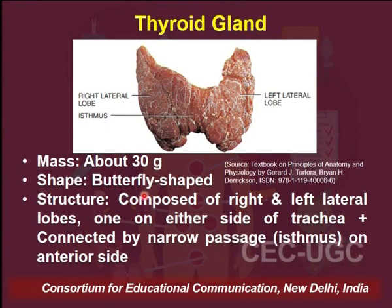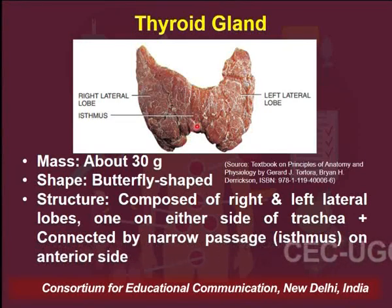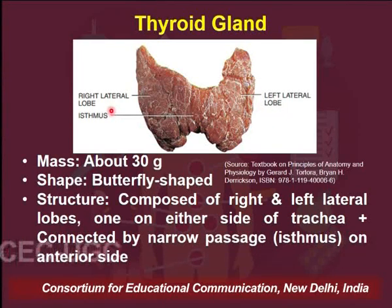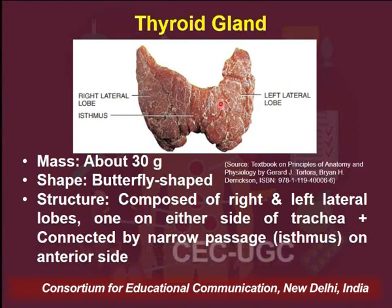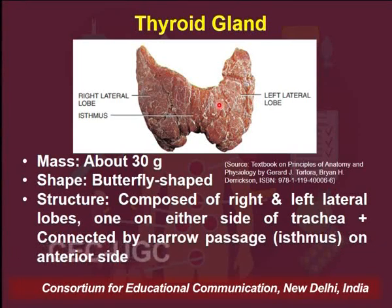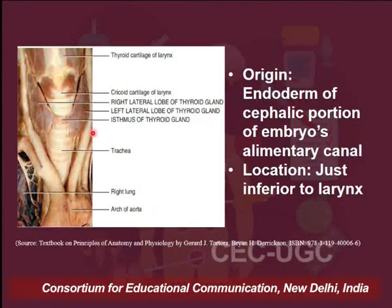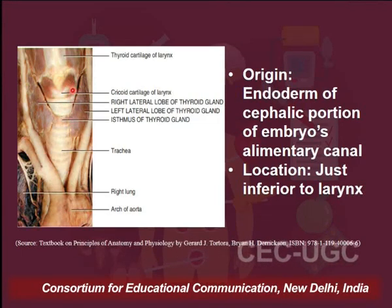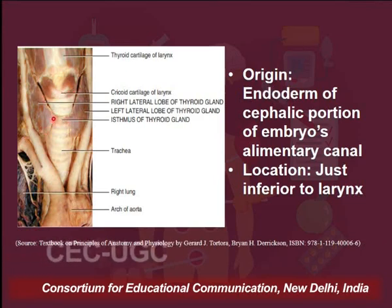The thyroid gland is a butterfly-shaped gland which is about 30 grams in mass. Structurally, it consists of two lobes — the left lateral lobe and the right lateral lobe — both connected with each other by a narrow passage called the isthmus, located on the anterior side. This gland is present over the windpipe, the trachea, and it lies just below the larynx. You can see the cricoid cartilage of the larynx, below which this butterfly-shaped gland is present.